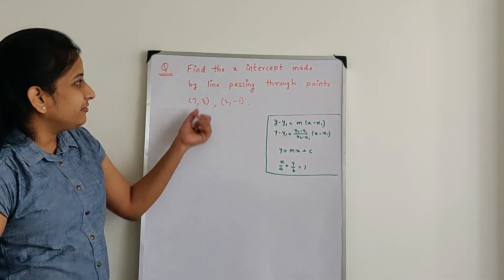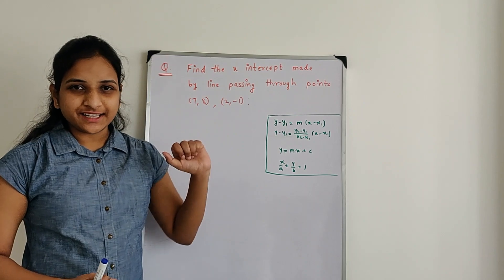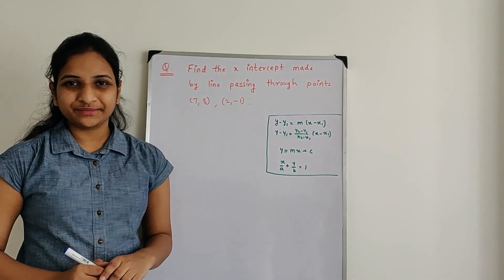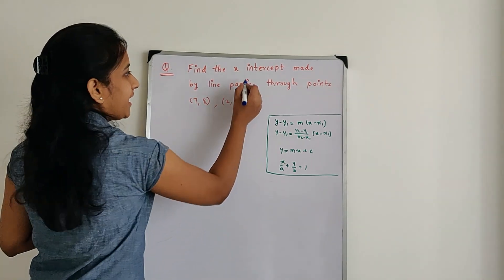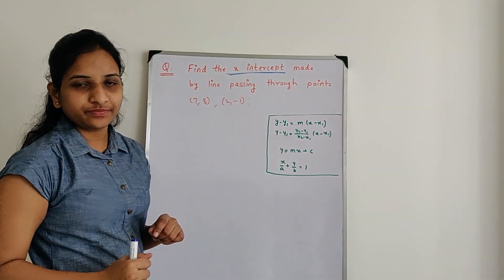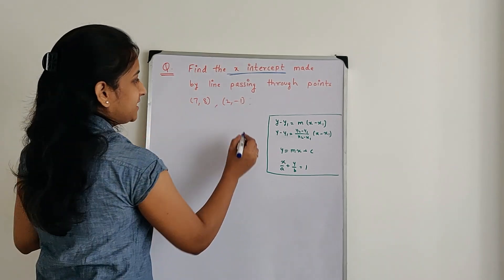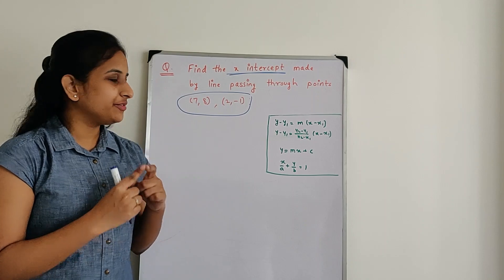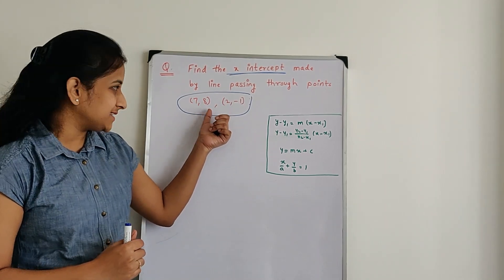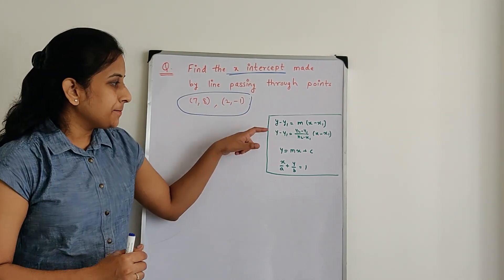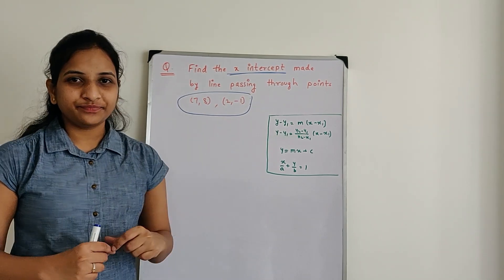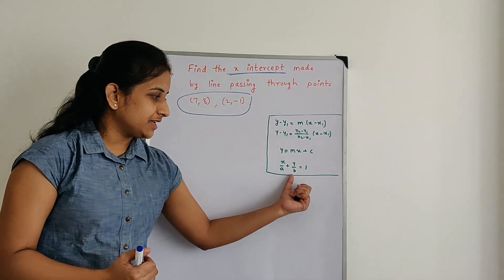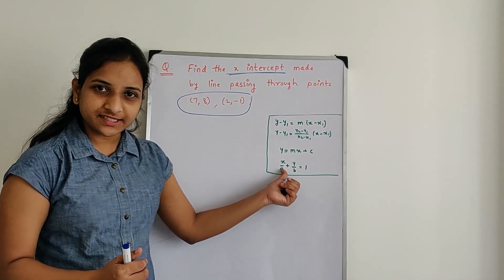In this example, we need to find the x-intercept made by the line passing through two given points. First, we need to find the equation of the line passing through these two points using the two-point form. Then we convert that equation into the intercept form to find the x-intercept.